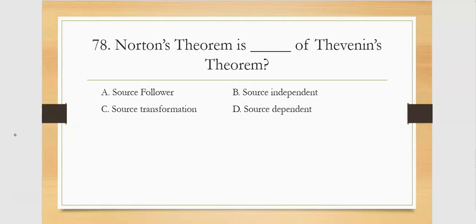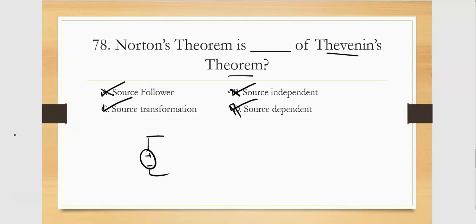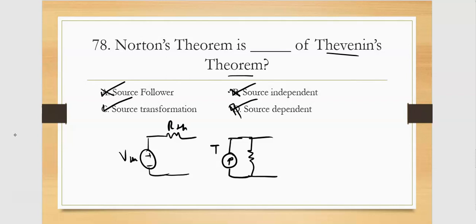Norton's theorem is a source transformation of Thevenin's theorem. Norton's theorem and Thevenin's theorem in comparison: Norton uses a current source where Thevenin uses a voltage source. The Norton current IN equals VTH divided by RTH. So Norton's theorem is essentially a source transformation of Thevenin's theorem.